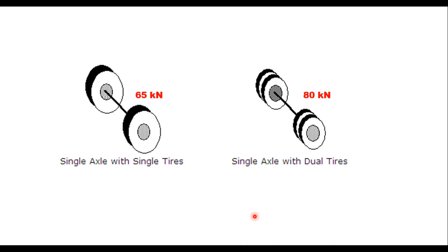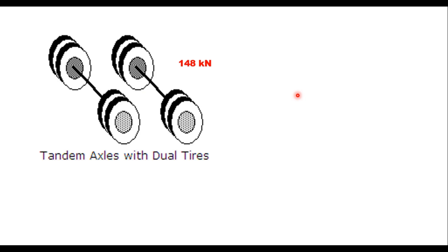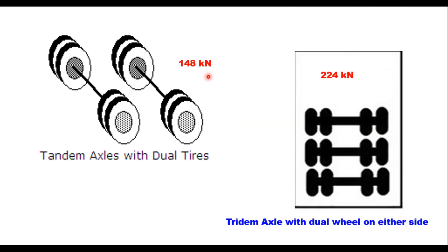A single axle with single tires on both sides has a safe axle load of 65 kN. A single axle with dual tires on either side has four wheels, and its safe limit is 80 kN. A tandem axle with dual tires has 8 wheels and a limit of 148 kN. A tridem axle with dual wheels on either side has 12 wheels, with a safe load of 224 kN.